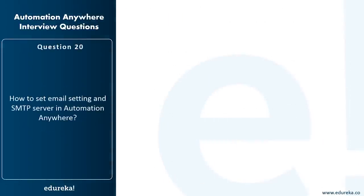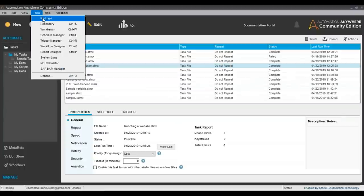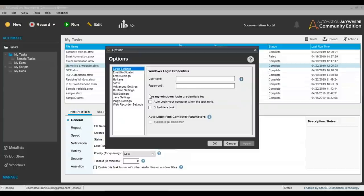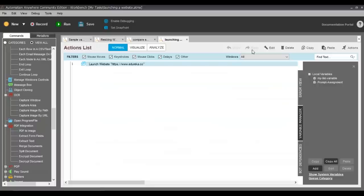How do you set email settings and the SMTP server in Automation Anywhere? Go to the client, then Tools > Options, and find the Email Settings option. Fill in details such as the host name, port number, user ID, and password. Let me demonstrate — in my Automation Anywhere client I'll go to Tools > Options > Email Settings, where I mention the host and port number, then click OK. That's how you set up email automation.